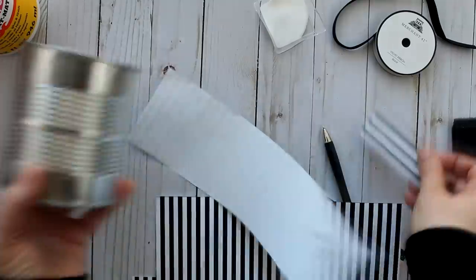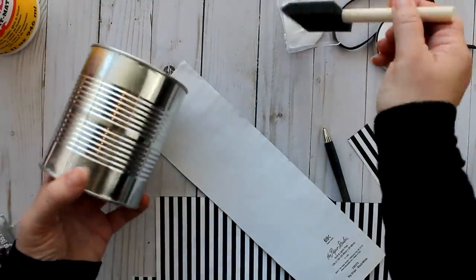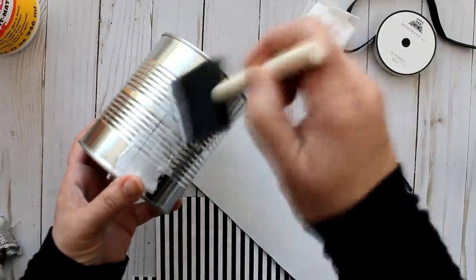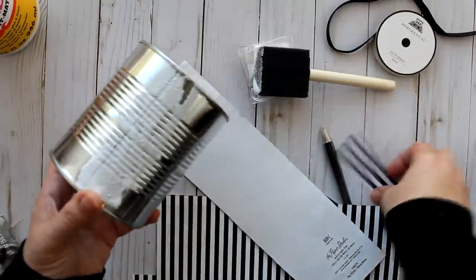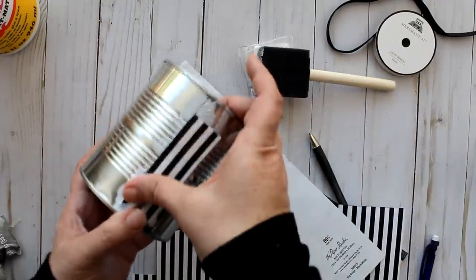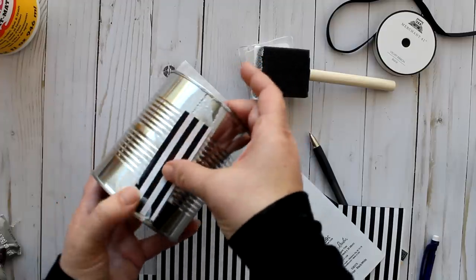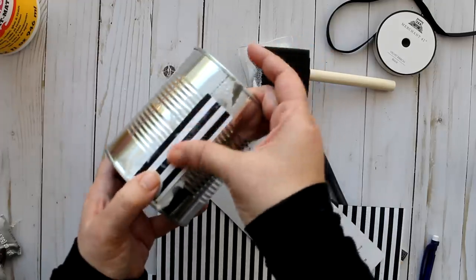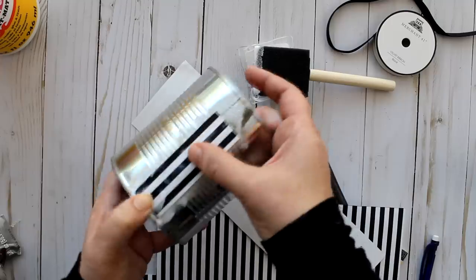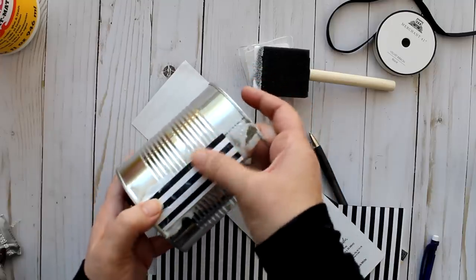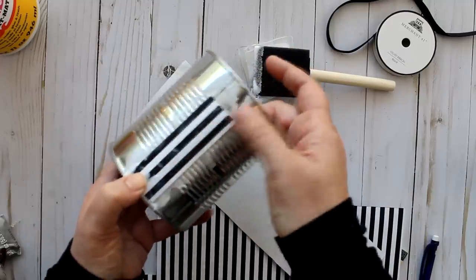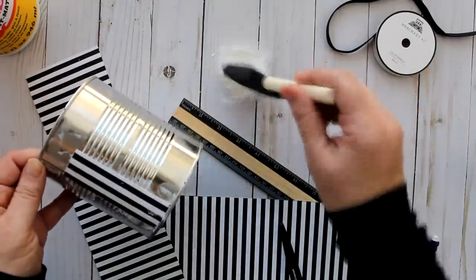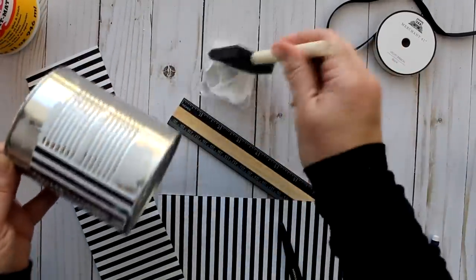And then since this scrapbook paper doesn't go all the way around I did have to cut a little filler piece and so I'm going to use some Mod Podge to apply the scrapbook paper to the can and I'm going to apply that little piece of filler first. And so once that goes on and I make sure that that is nice and secure I'm going to go ahead and take my other piece of scrapbook paper and wrap it around starting at that spot where the little filler piece is.